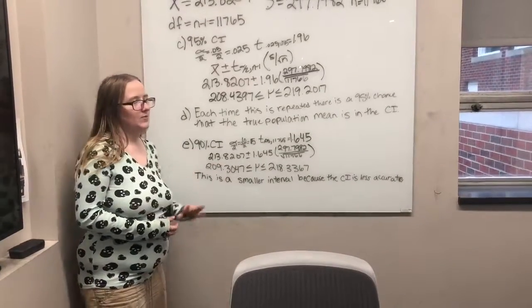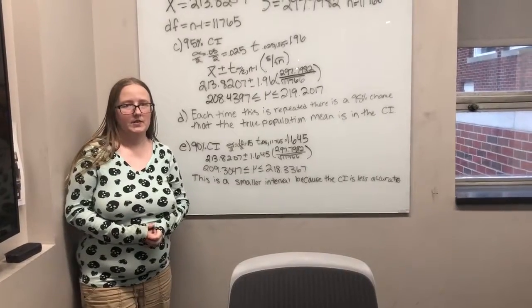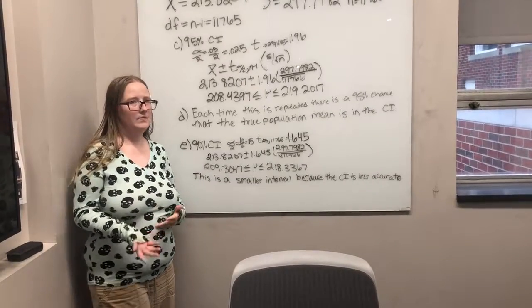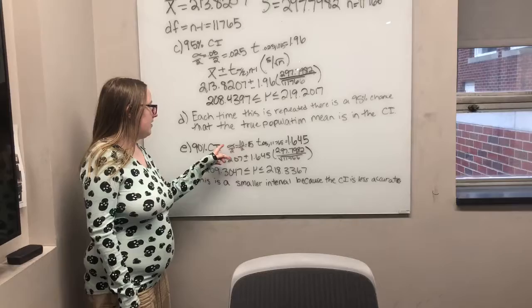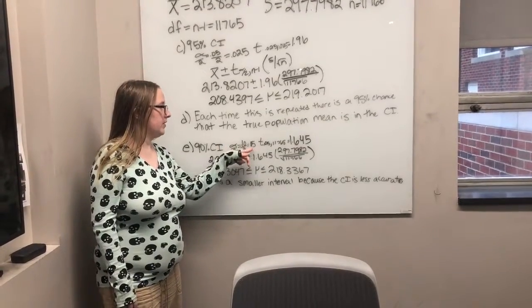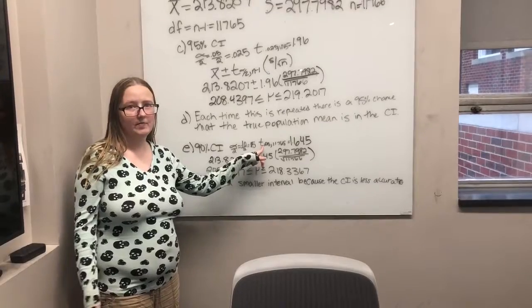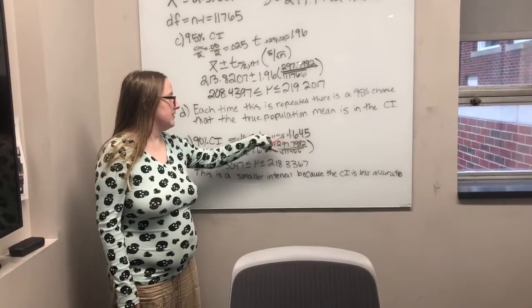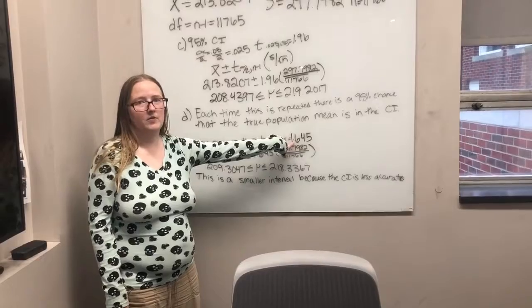And then E, we were supposed to do a 90% confidence interval. So you do the same thing. You find your alpha, which in this case is 0.1, you divide it by 2, so that gives you 0.05. You look in the table, and it tells you that your t-value this time is 1.645.